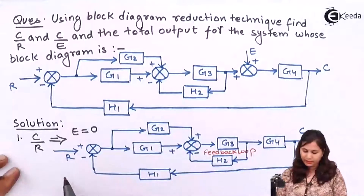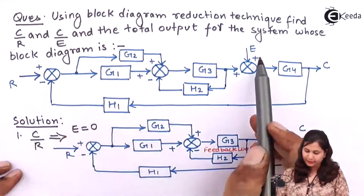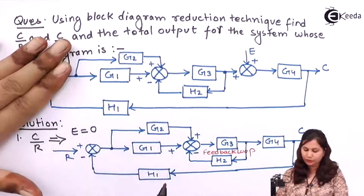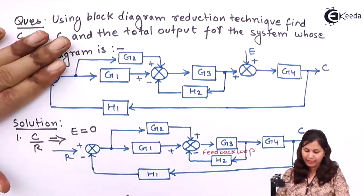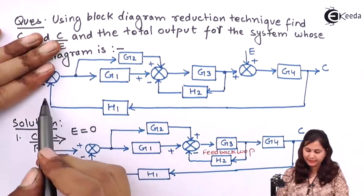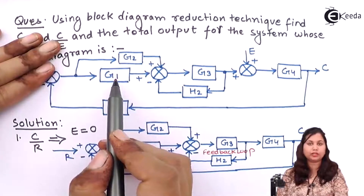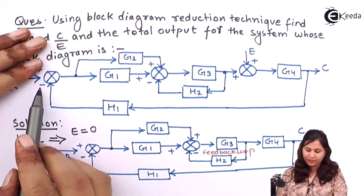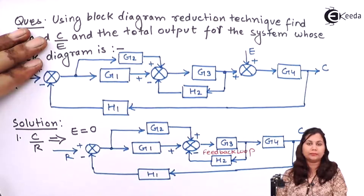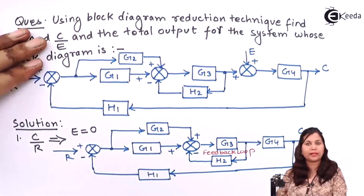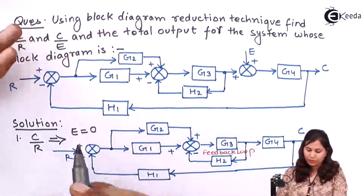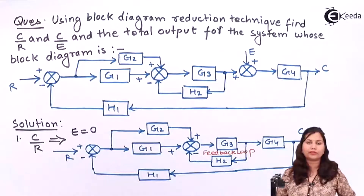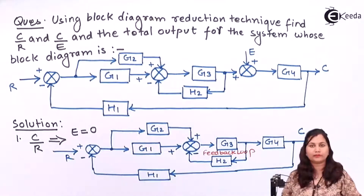Our question was this, and now we have to find C by E, so we will assume R equals zero. We will see that this H1 input will be directly given to block G1, and here we are having a negative sign. So this negative sign will come with the block having transfer function H1, and it will become minus H1. We assume R equals zero and then apply the rules of block diagram reduction technique.